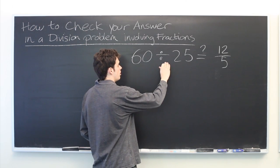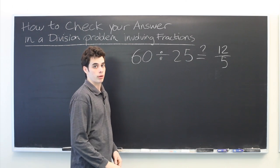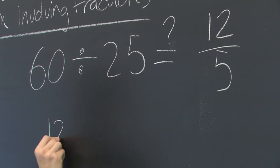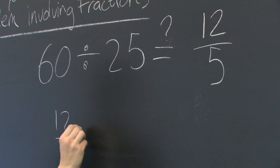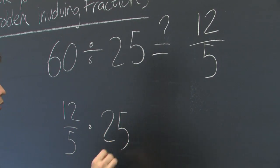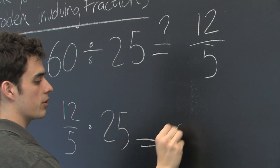Recall that division is the inverse operation of multiplication. So if this is the correct answer, then it should be true that 12 over 5 multiplied by 25 will equal 60.